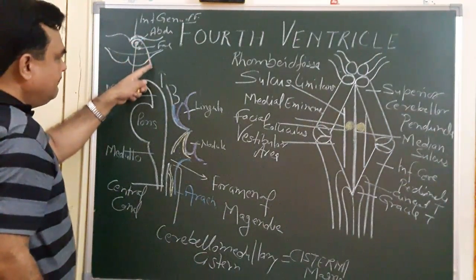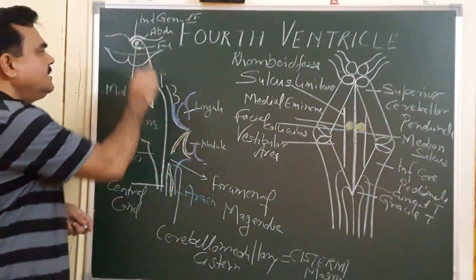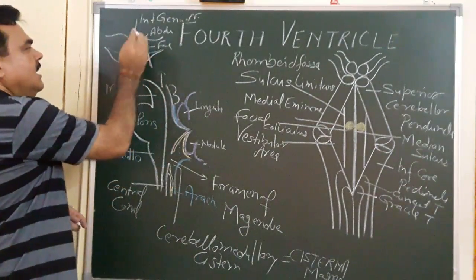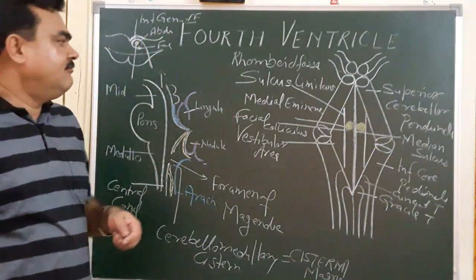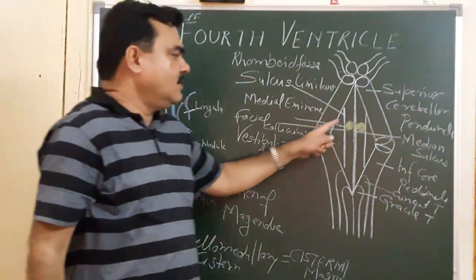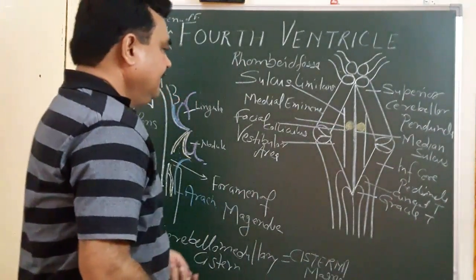These structures — the abducent nerve nucleus, the facial nerve nucleus, and the internal genu of the facial nerve — are responsible for forming the elevation known as the facial colliculus, as they lie deep to this surface elevation.